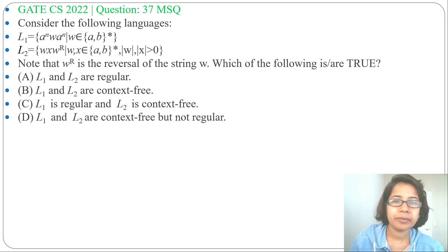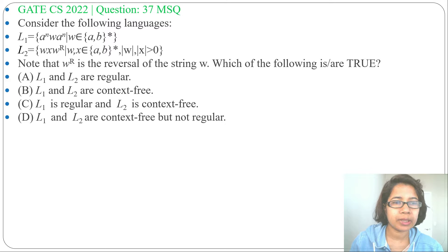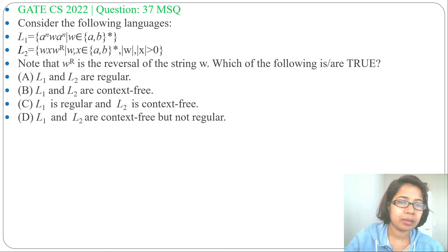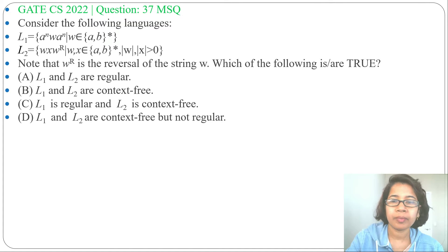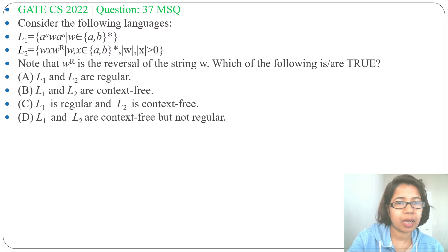Let's solve a previous question on regular language and context-free language asked in GATE CS 2022, question number 37. It is an MSQ — consider the following two languages. Note that w-reverse refers to the reversal of string w. Which of the following is or are true? Four options are given. Let me analyze these two languages first, then check each option.